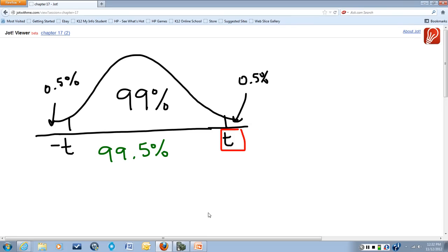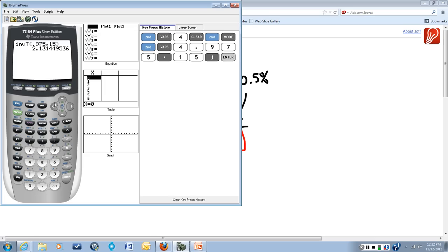We're going to use the inverse T function on the calculator to do that. So the inverse T will do second and the bars key, and the second function is distributions. And it's the fourth one. You see it says inv T, inverse T function.